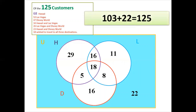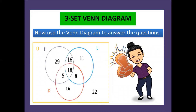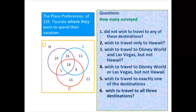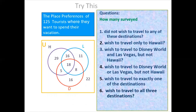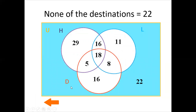We have now completed the 8 regions of the Venn diagram and can use it to answer the questions. Question 1: How many surveyed did not wish to travel to any of these destinations? The answer is 22 — that is the region outside the three circles.